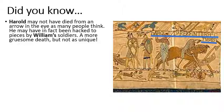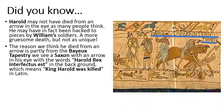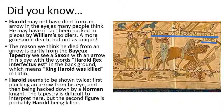Did you know that Harold might not have actually died by getting an arrow through his eye? He may have actually just been hacked to pieces by William's soldiers — no less gruesome, but not as unique. The reason we think this is because on the Bayeux Tapestry there is an inscription saying 'Harold Rex Interfectus Est', which makes us think the person with the arrow in his eye is Harold, but he could quite possibly be the person on the right-hand side falling down. We just don't know.